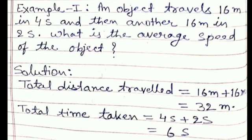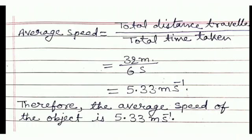For the solution, total distance travelled = 16 m + 16 m = 32 meters. Total time taken = 4 s + 2 s = 6 seconds. Using the formula, average speed = total distance / total time = 32 m / 6 s = 5.33 meter per second. So the average speed of the object is 5.33 meter per second.